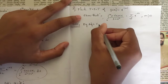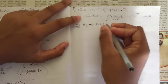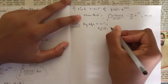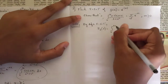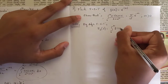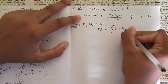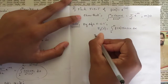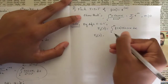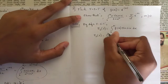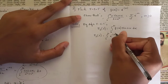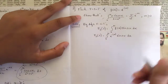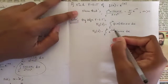By the definition of the Fourier sine transform, F_s(s) is equal to the integral from zero to infinity of f(x)·sin(sx)·dx. Now substitute the value of f(x): we get the integral of e^(-|x|)·sin(sx)·dx.